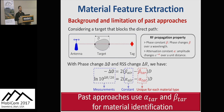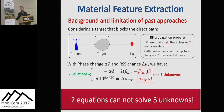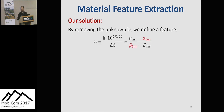Past approaches use beta-Target and alpha-Target for material identification. However, we are unable to solve these two equations with three unknowns — namely beta-Target, alpha-Target, and the target size D. So the past method does not work when target size D is unknown. To solve this problem, in this paper we can remove the unknown target size D and discover a new material feature, which is given here.